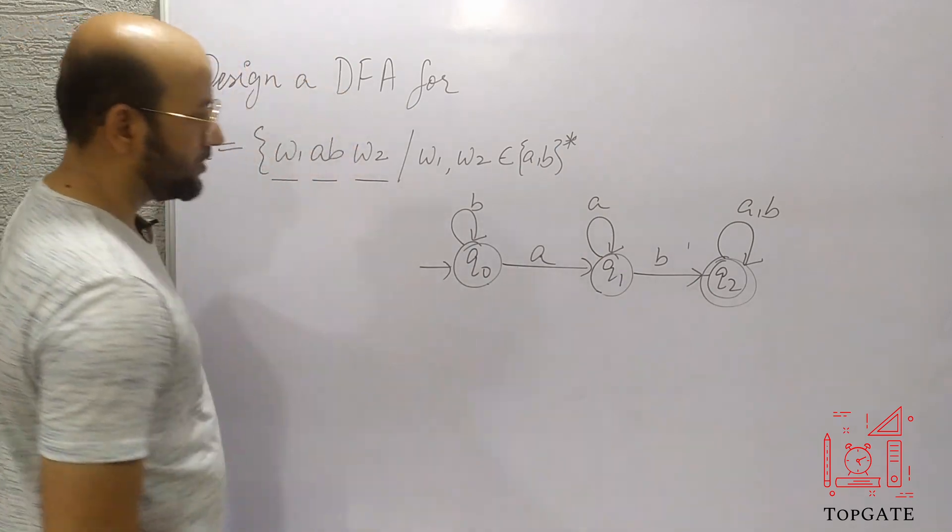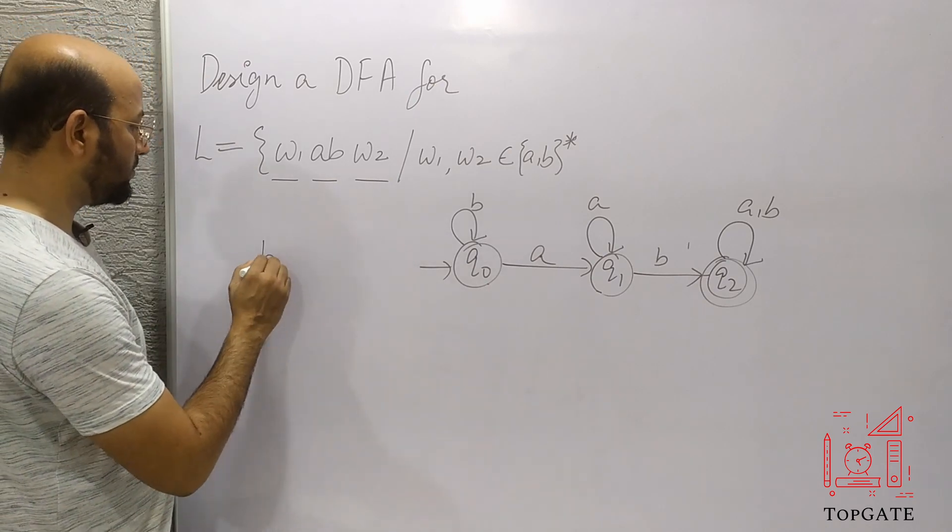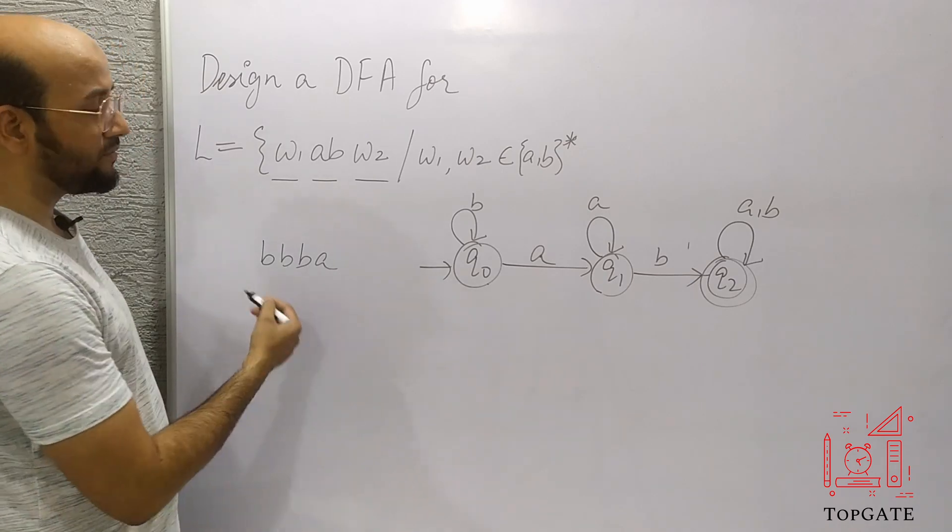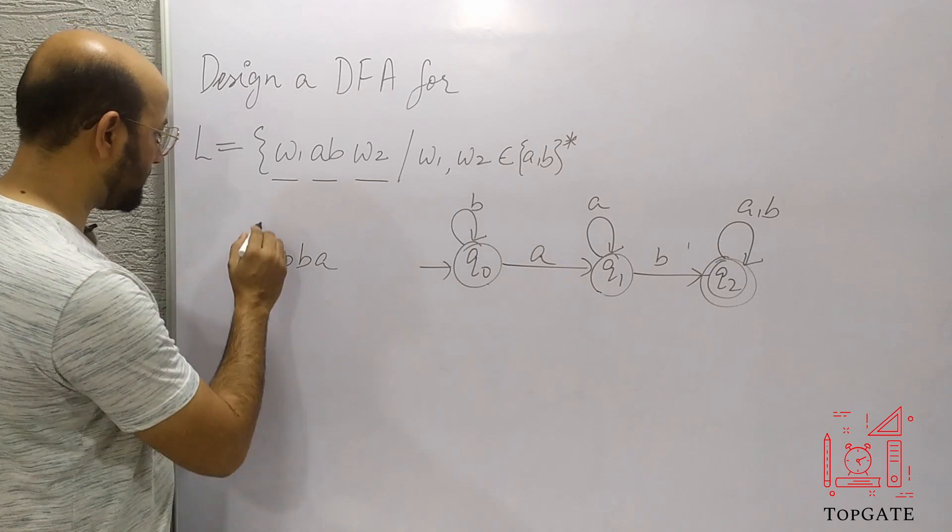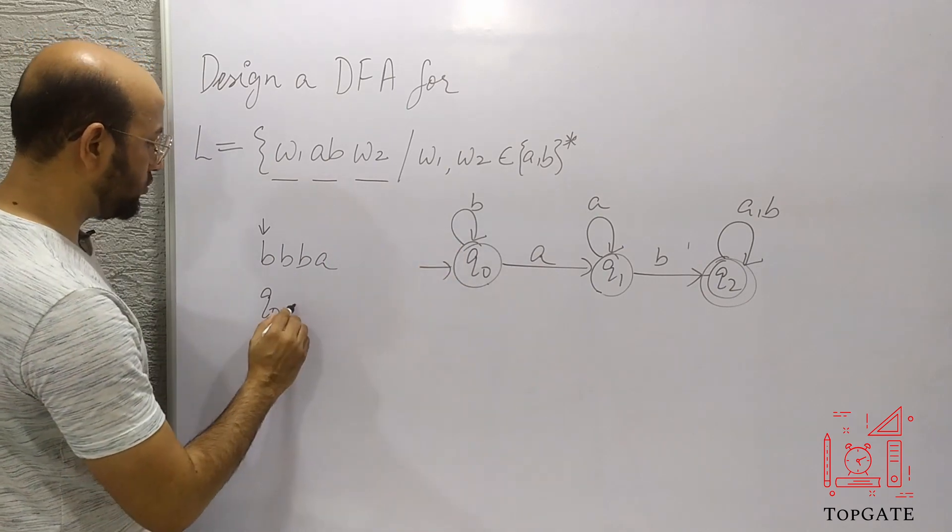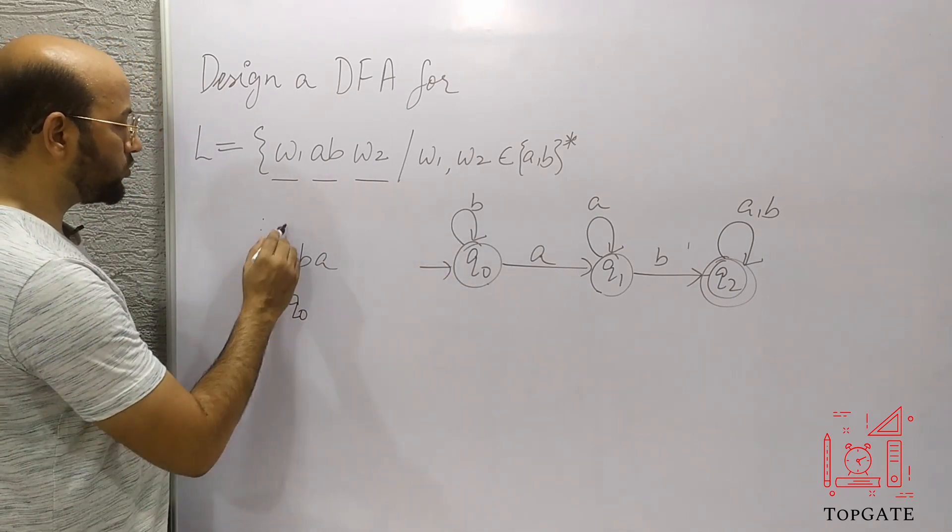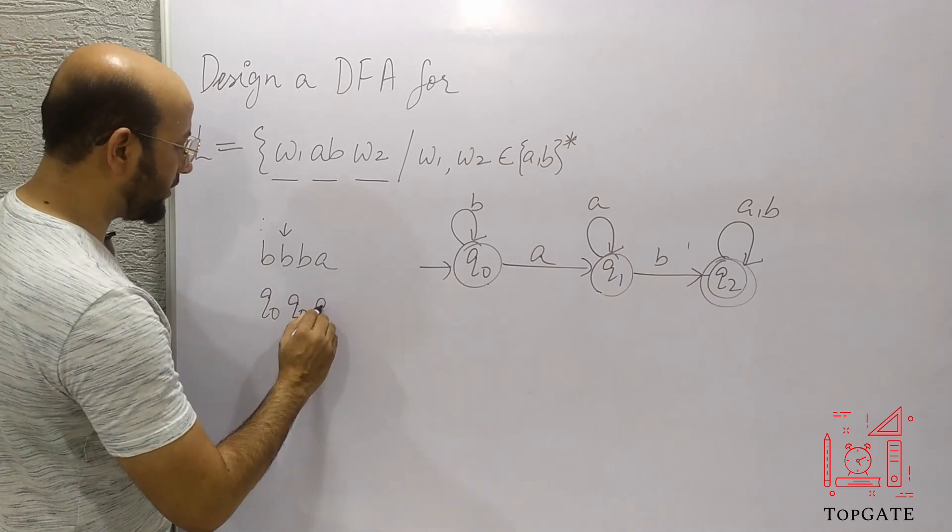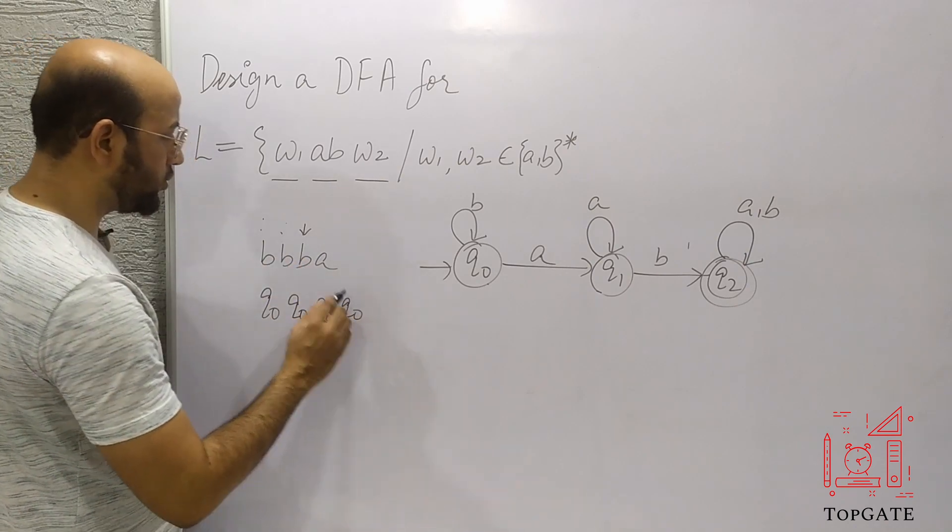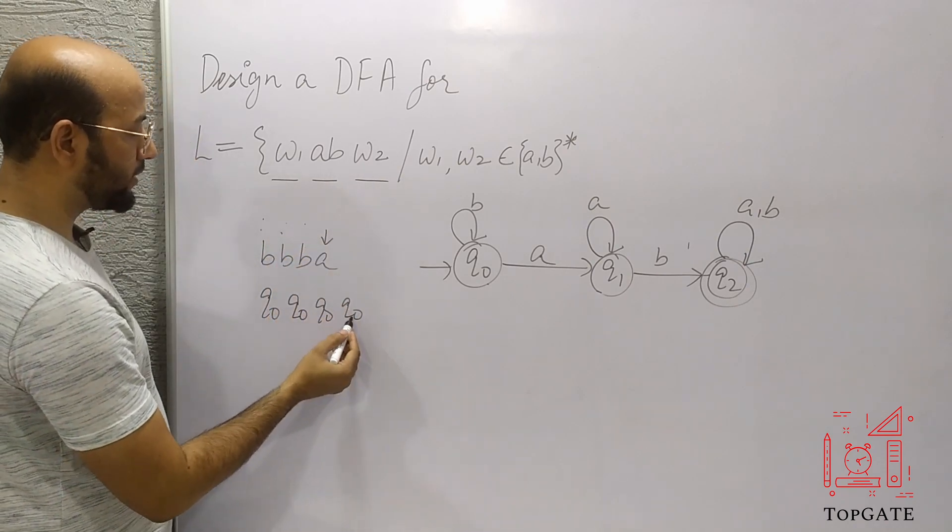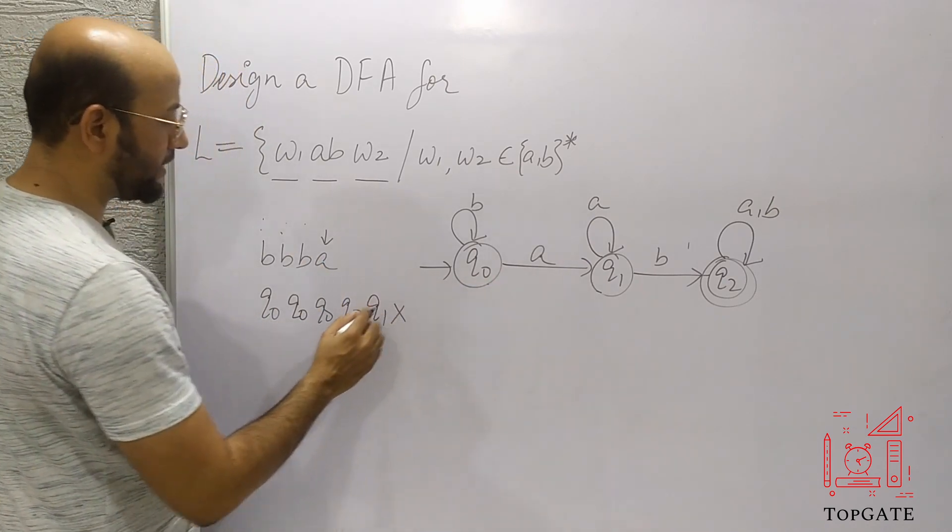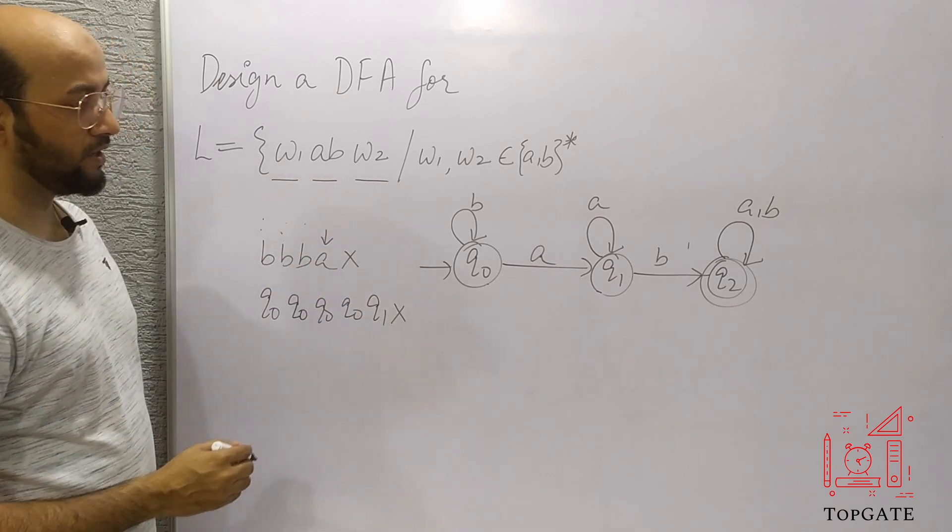Now let's take some wrong string also. Suppose I have BBBA. In this one, I don't have any AB in this case. So let's start. The pointer is currently on to the first B, state is Q0, the initial state. Q0, B applied, I went to Q0 only and the pointer moves on to B. At Q0, B applied, I again went to Q0, pointer moves on to next B. At Q0, again B applied, move to Q0 and the pointer moves on to A. Now at Q0, A applied, I went to state Q1, which is not my final state. Therefore, this string is getting rejected by this DFA.